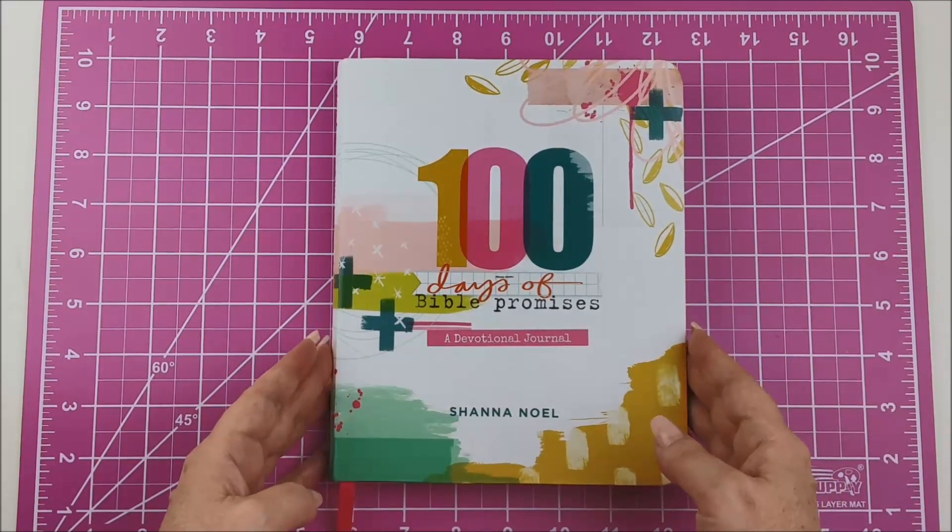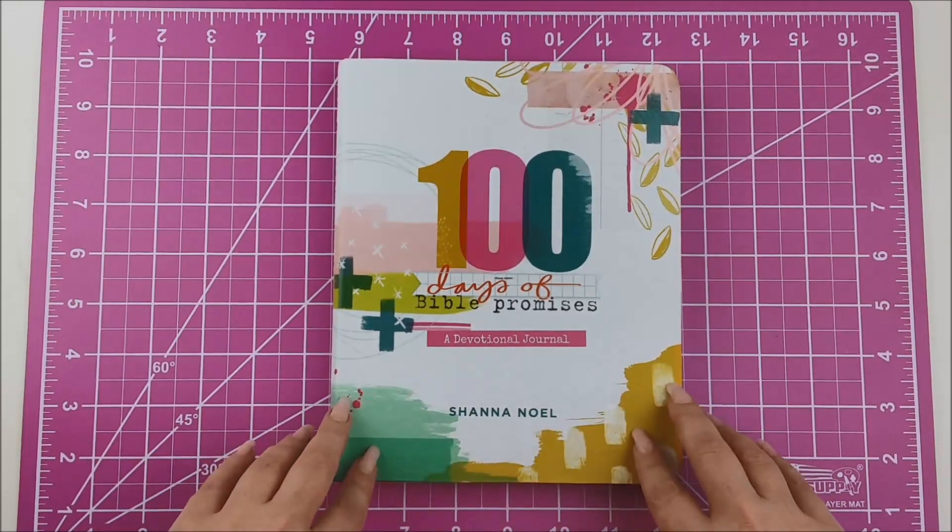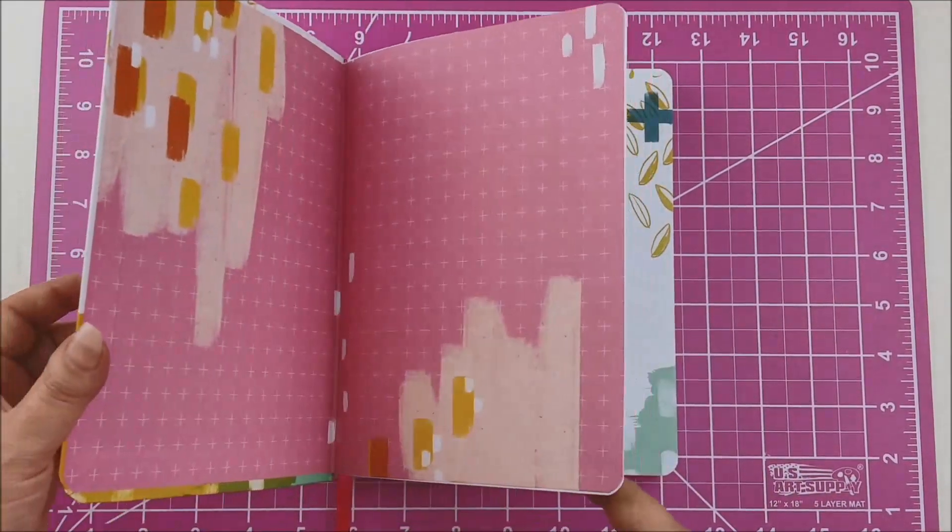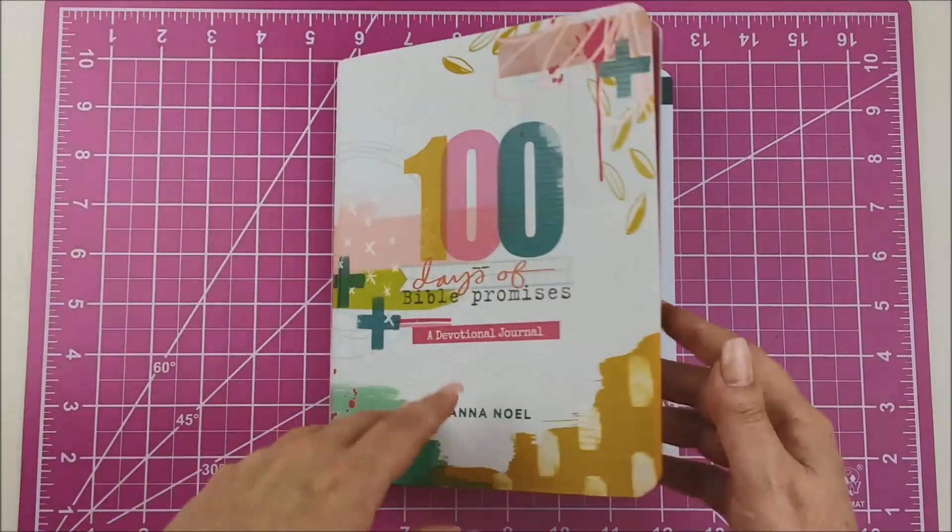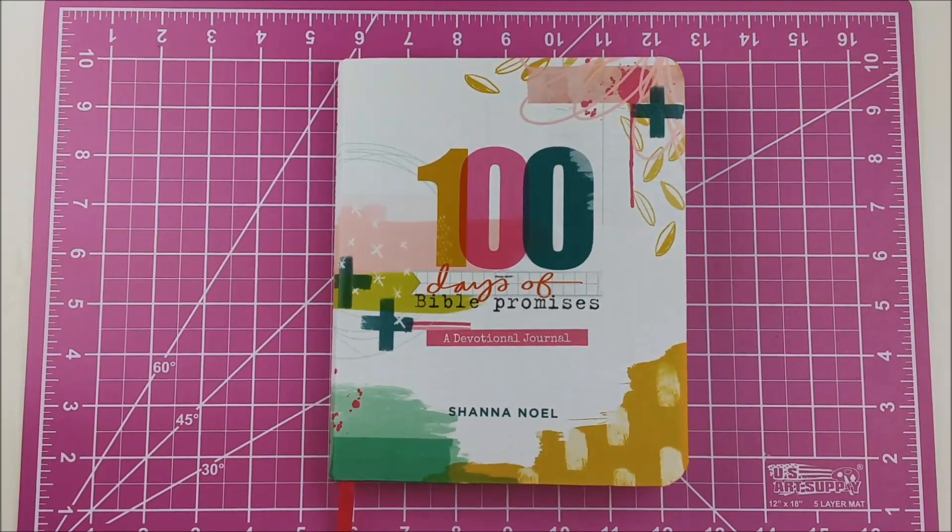So if you want to see how people are unbinding these and turning them into disc-bound or spiral-bound, I'm going to show you, and I'll show you some of the little things that I've done in here. So stick around if you want to see how I'm doing it.